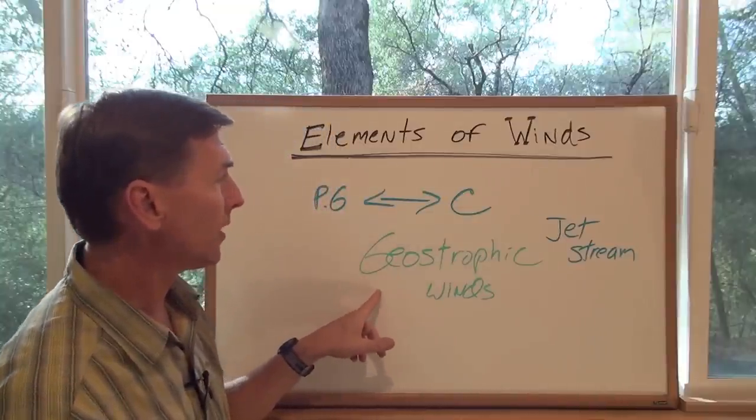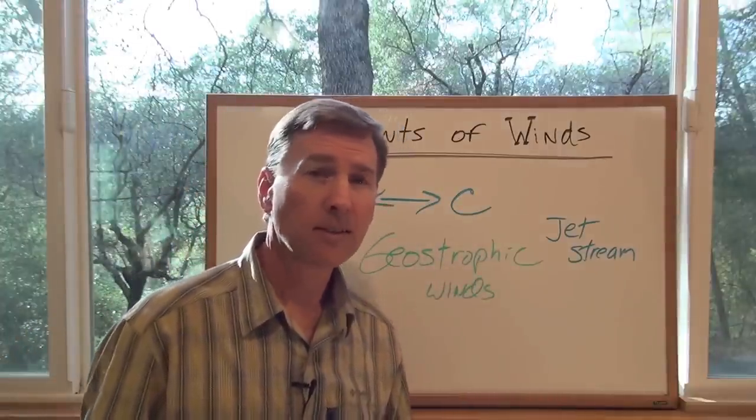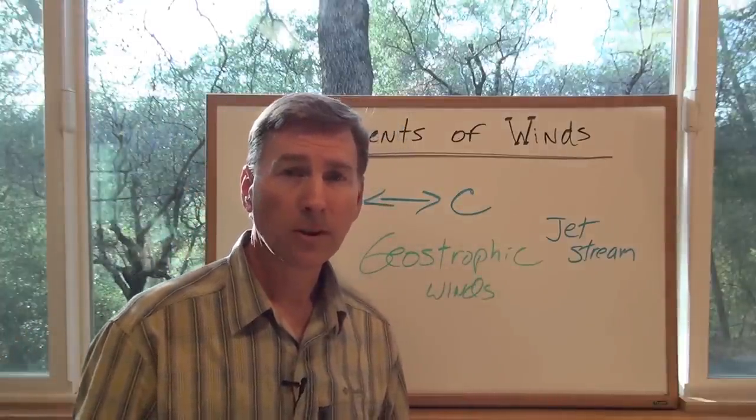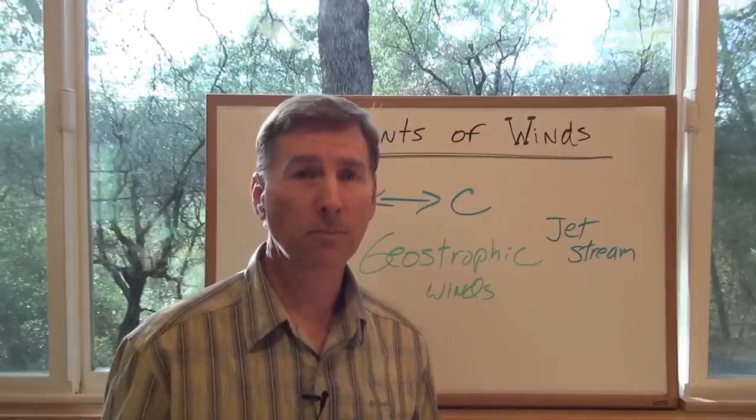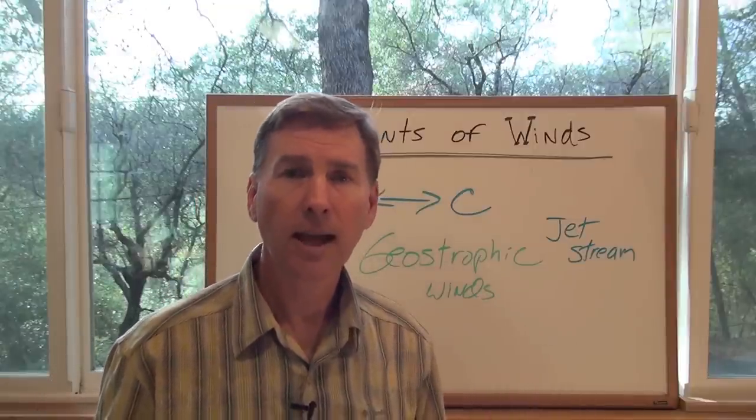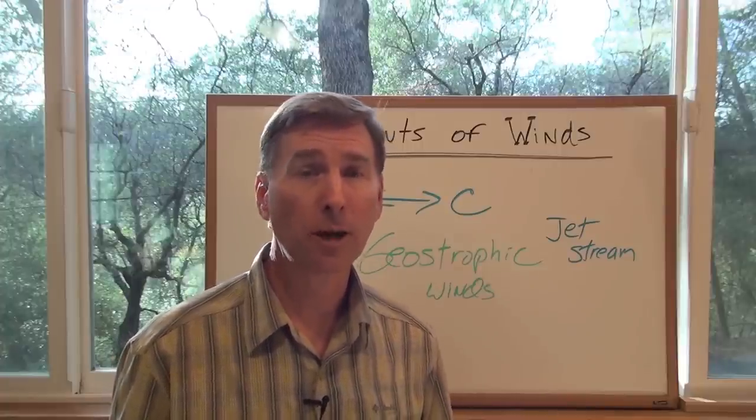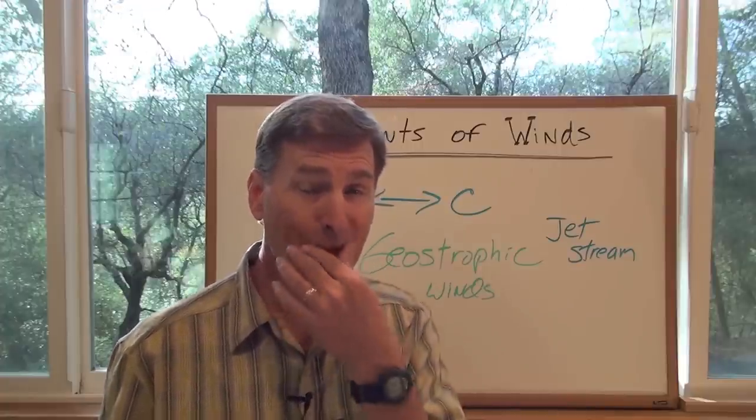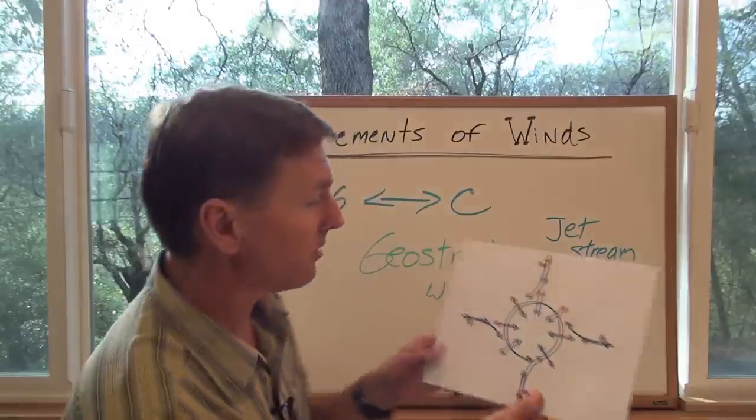And what the heck is that? One thing we've all heard of is the jet stream. So that's probably the best real-world example. But basically what this is, is both of the forces, the pressure gradient and Coriolis force, are balanced in the upper atmosphere, so we can call them the upper atmosphere winds. These are the geostrophic winds. And let's take a look at this diagram.